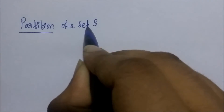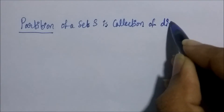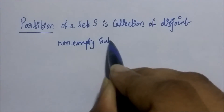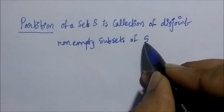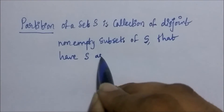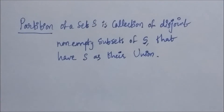A partition of a set S is the collection of disjoint non-empty subsets of S whose union is the set S itself.